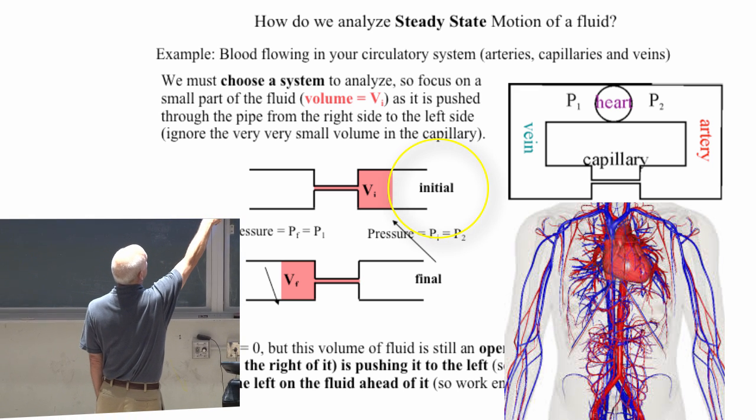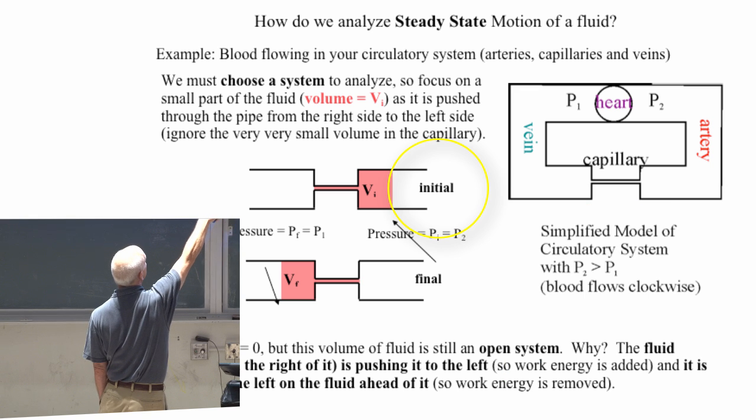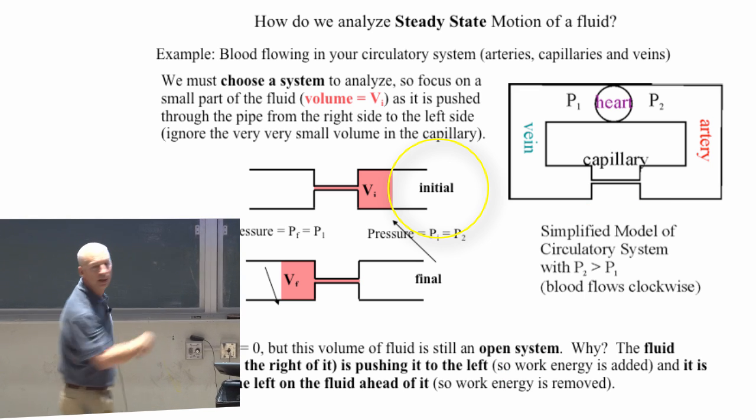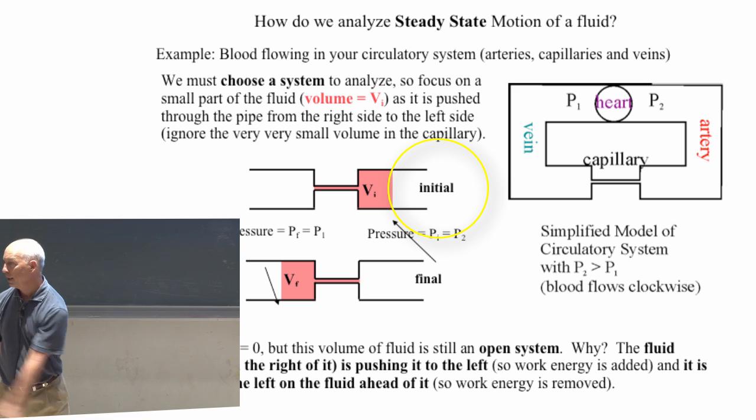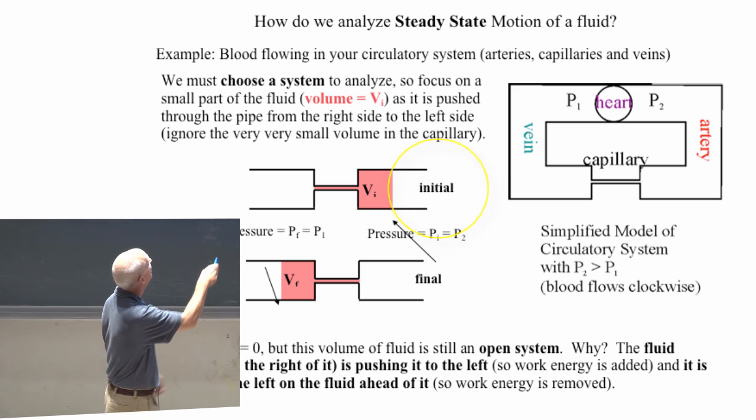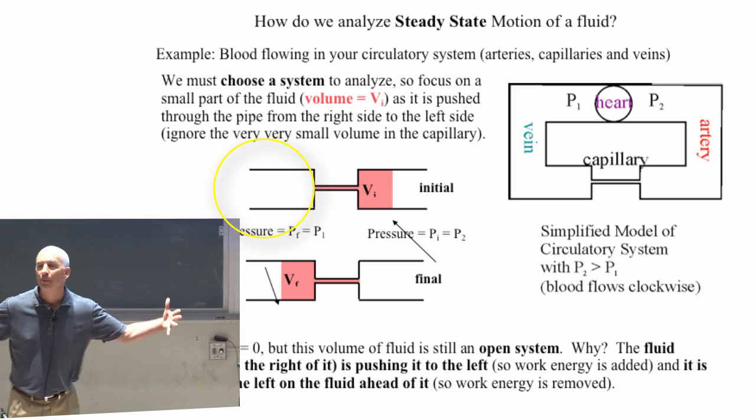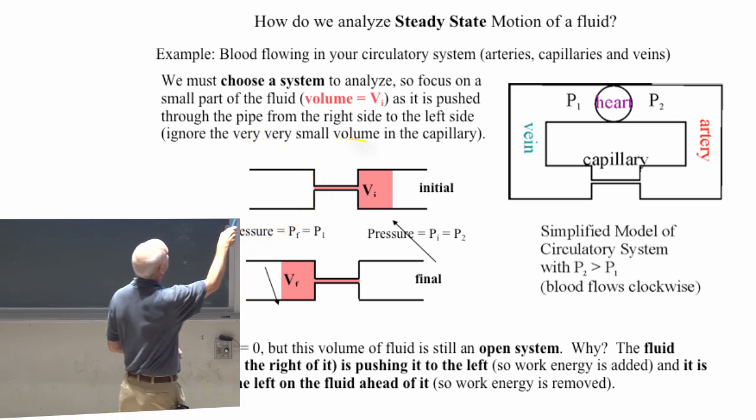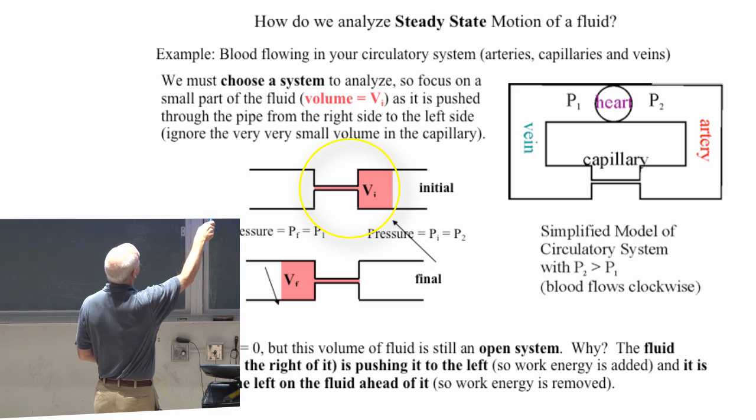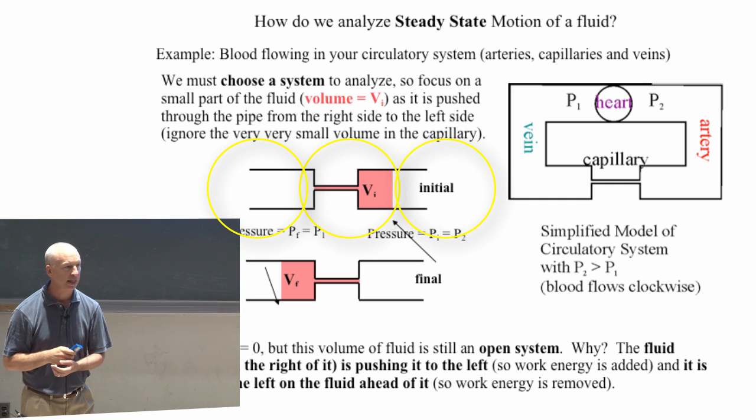There's blood behind this little volume that I called V sub I, the initial volume. There's blood behind there. What's that blood doing? It's pushing on it. Because something pushed on it. So it's pushing on this. And there's also fluid on the other side. The pipes are completely full. So this little piece right here is being pushed on from behind. And it's pushing the stuff that's ahead of it. Those two things are going on at the same time.